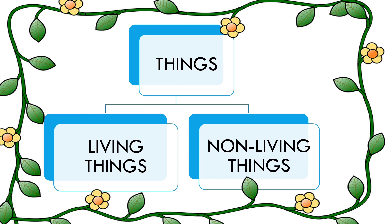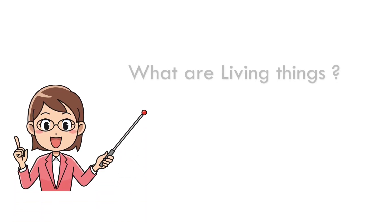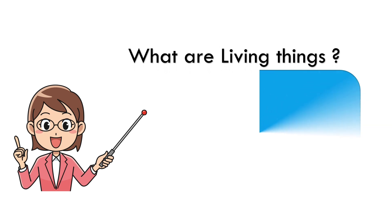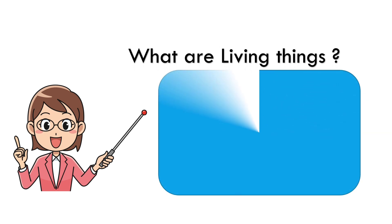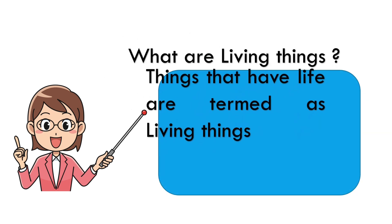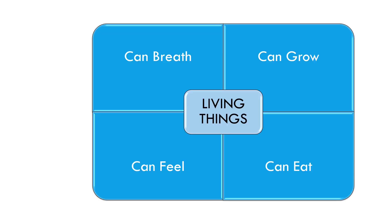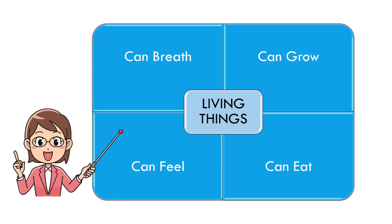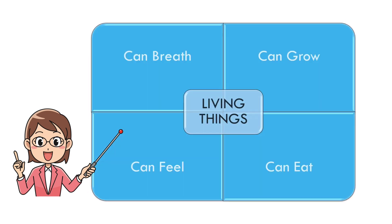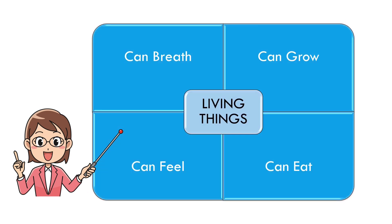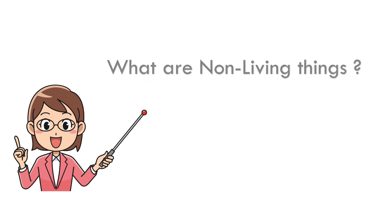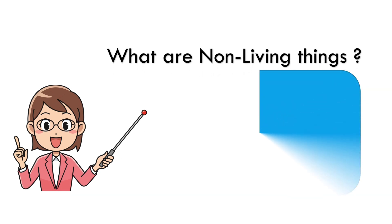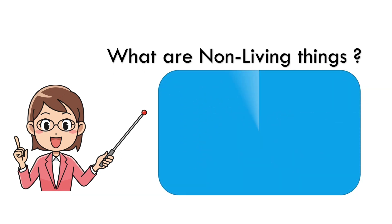To know the difference you should know what are living things and what are non-living things. What are living things? Things that have life are termed as living things. In short, living things can breathe, can feel, can grow, can eat, and reproduce.